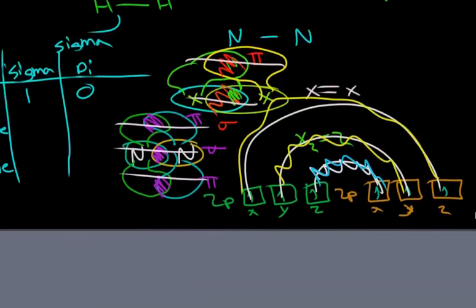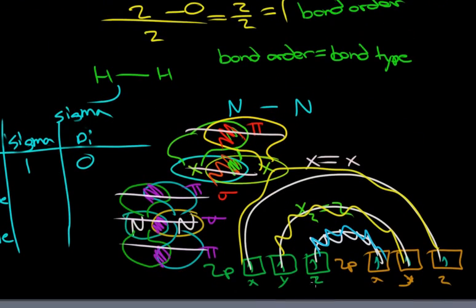We know that if we have, like, the 2p x, y, and z, if it's 3, then we're going to have a triple bond. The first one is sigma. The other two are pi.